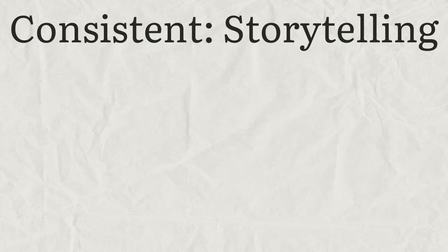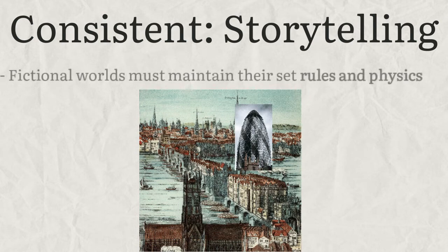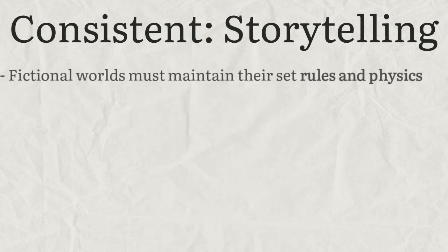So, onto storytelling then — what needs to be consistent here? Well, firstly, your fictional world needs to maintain its set rules and physics. If your story is set in 3rd century London, you probably wouldn't describe the Gherkin building sat in the middle of the city, because in our world it wouldn't have been built yet. Similarly, you wouldn't have your human characters be able to grow extra arms at will, since human beings are not currently capable of such feats.